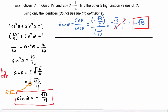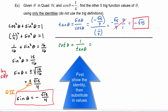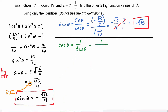Since we have tangent of theta, it's easy to find cotangent of theta using the reciprocal identity: cotangent of theta equals one over tangent of theta. It would also be okay to use cotangent equals cosine over sine — you'd get the same answer. Using the reciprocal identity, we get one over negative radical fifteen, and after rationalizing we get negative radical fifteen over fifteen.